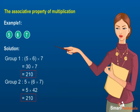As in both the groups the product is the same, we can say that multiplication is associative for whole numbers.